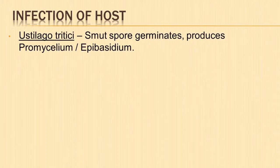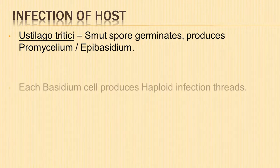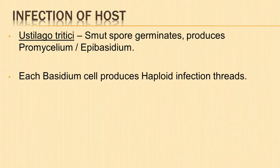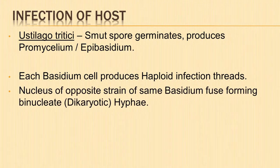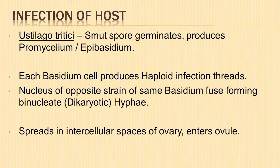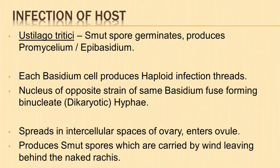In Eustilago tritici, the smut spore germinates to produce a promycelium or epibasidium on the stigma of the flower. Each basidium cell produces a haploid infection thread. The infection threads of the same basidium with nuclei of opposite strains fuse, resulting in a binucleate or dikaryotic hypha. When it reaches the ovary it branches and spreads into the intercellular spaces of the ovary and finally enters the ovule, producing smut spores which are exposed when the host tissue decays.